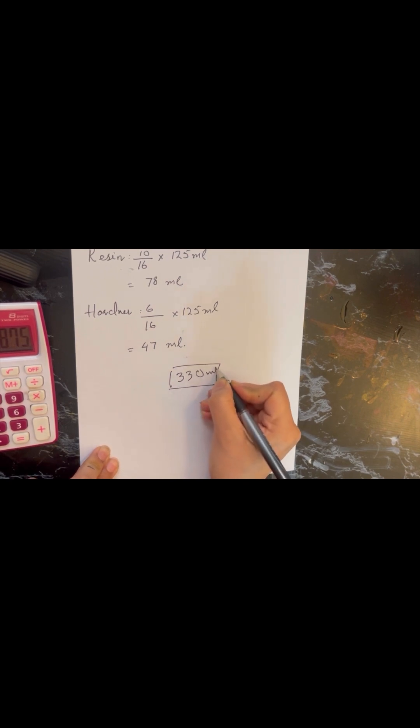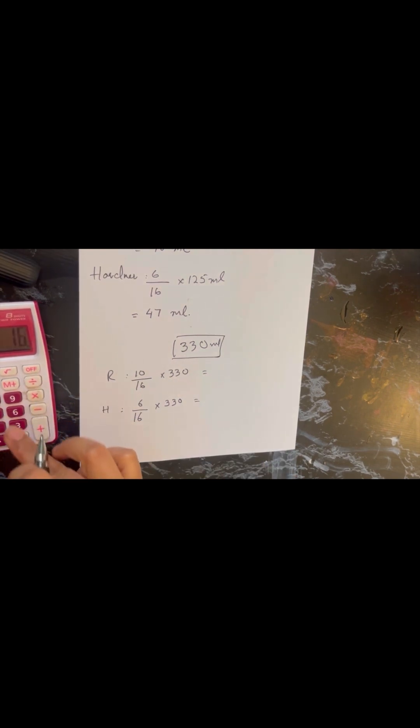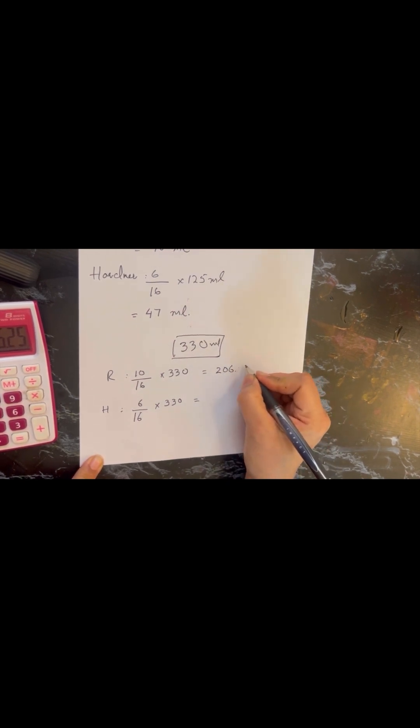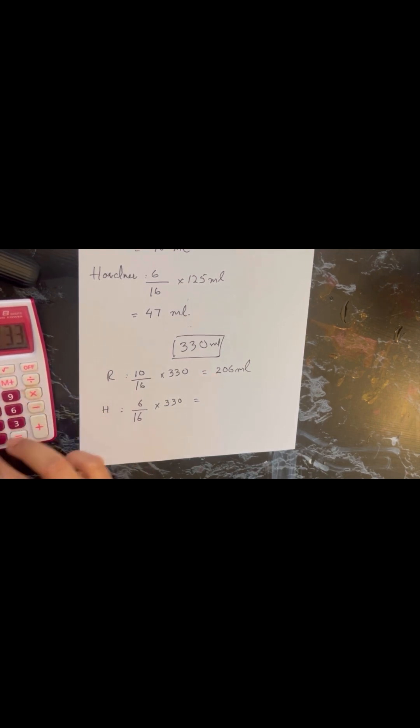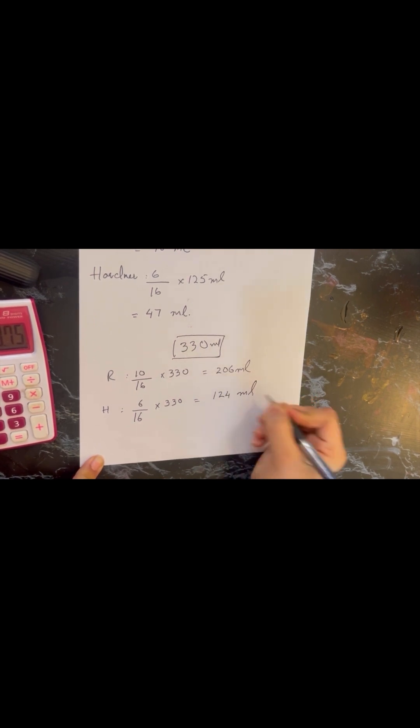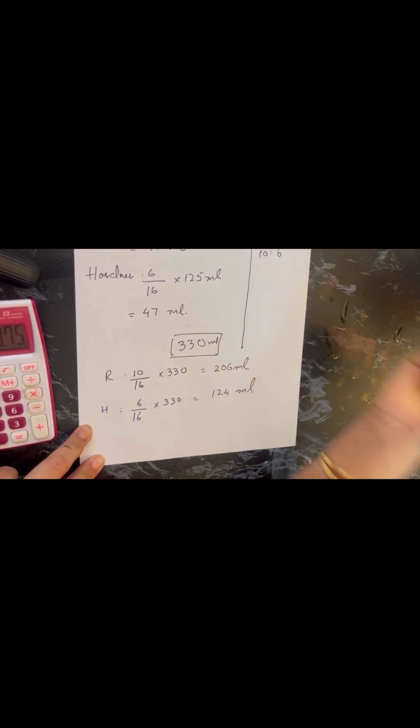And together 47 ml plus 78 ml will make 125 ml. Now let's say we are working on a project that needs 330 ml of resin. How you are going to calculate resin and hardener? Same way: 10 by 16 times 330 for resin and 6 by 16 times 330 for hardener. So these are the values, we will round them up or down according to the number that falls after the decimal place. That's it, so this is for 10 ratio 6.